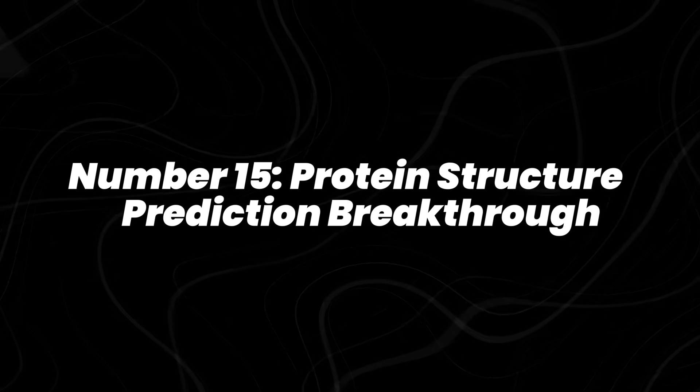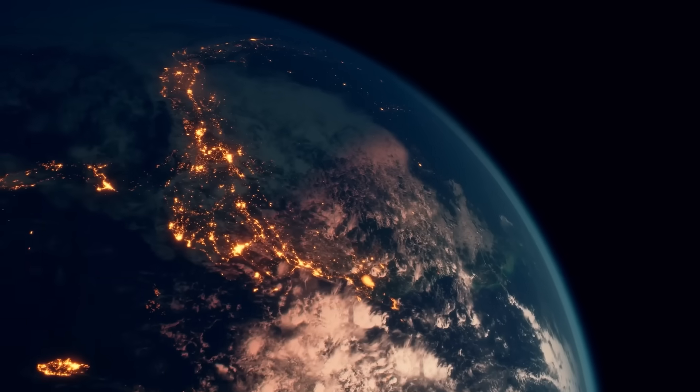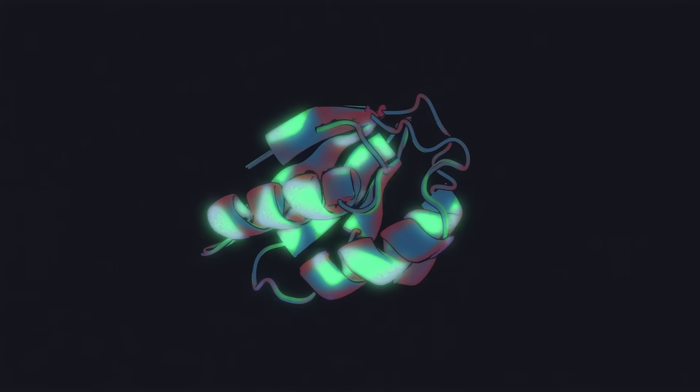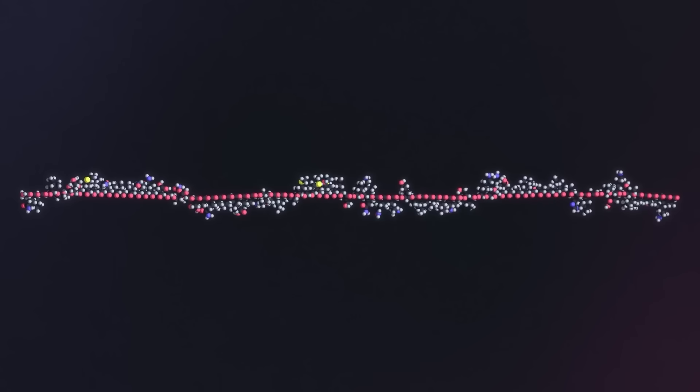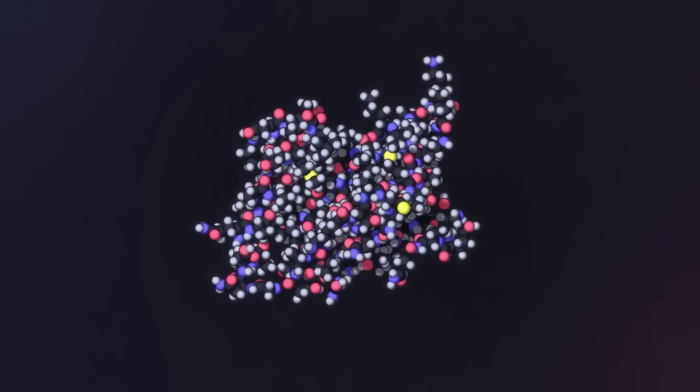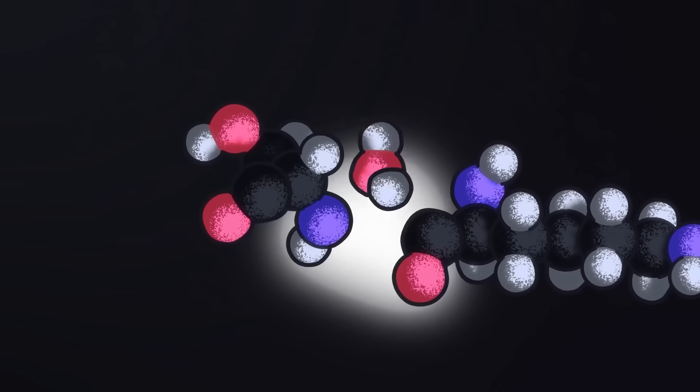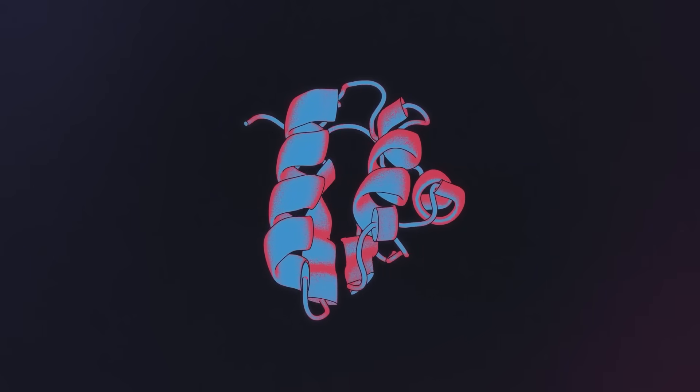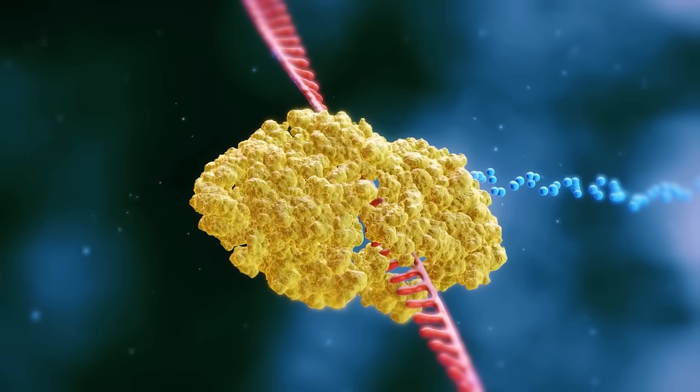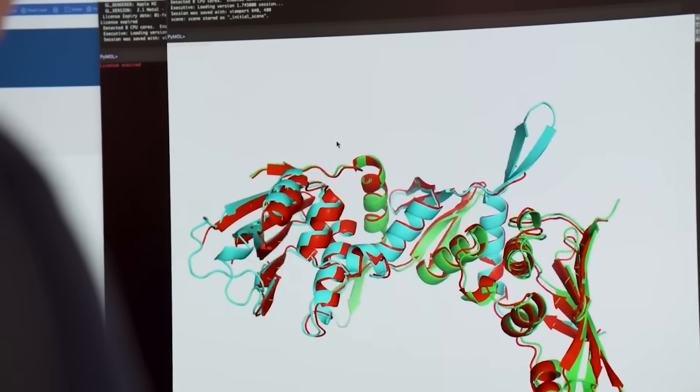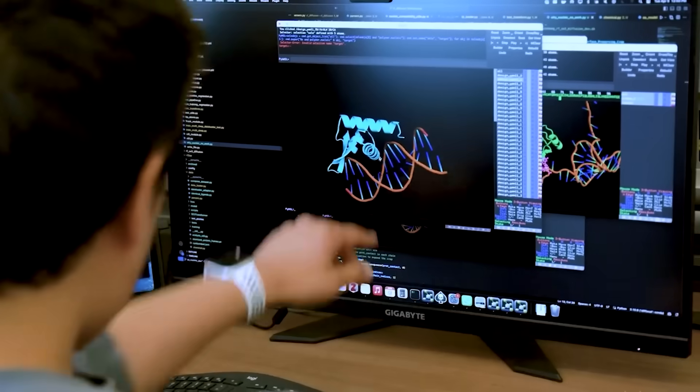Number 15, protein structure prediction breakthrough. For half a century, predicting how proteins fold was one of biology's biggest unsolved challenges. Proteins form the machinery of life, and their shape determines how they function. Misfolding is tied to diseases like Alzheimer's and Parkinson's. But solving these 3D structures used to take years of experiments.